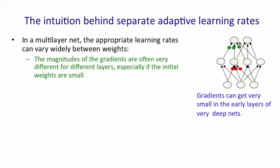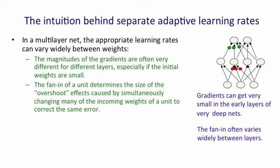For example, if we start with small weights, the gradients are often much smaller in the initial layers than in the later layers. Another factor that causes us to want different learning rates for different weights is the fan-in of a unit. The fan-in determines the size of the overshoot effects that you get when you simultaneously change many of the different incoming weights to fix up the same error.